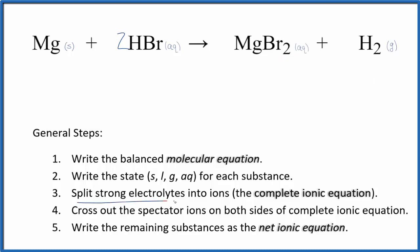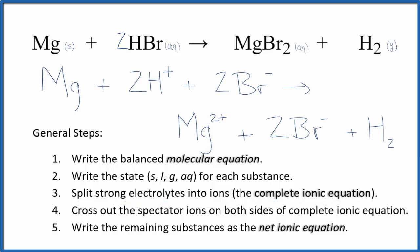Once we have the states, we can split the strong electrolytes into ions. That gives us the complete ionic equation. That'll look like this. So this is the complete ionic equation.